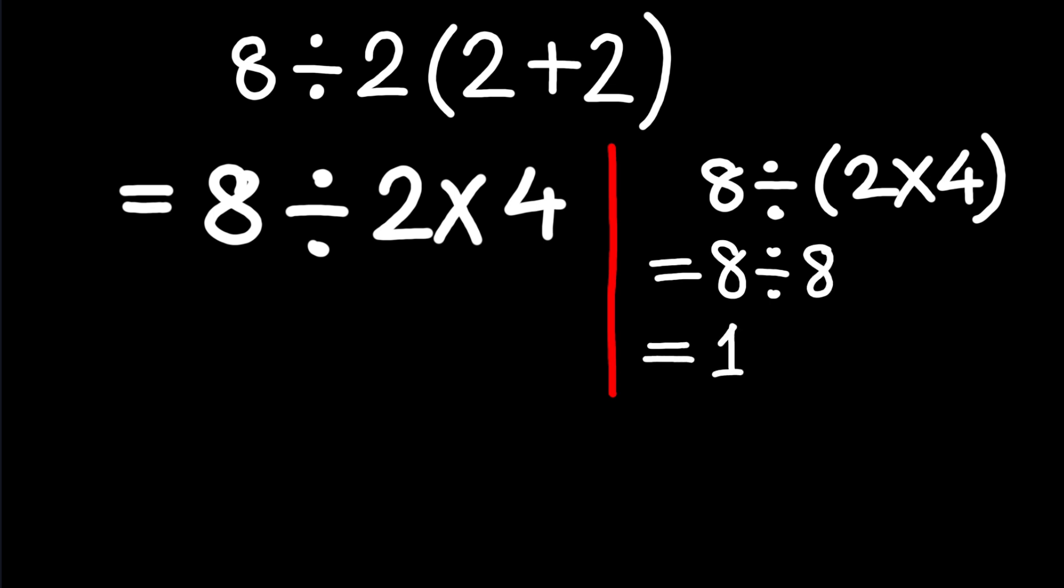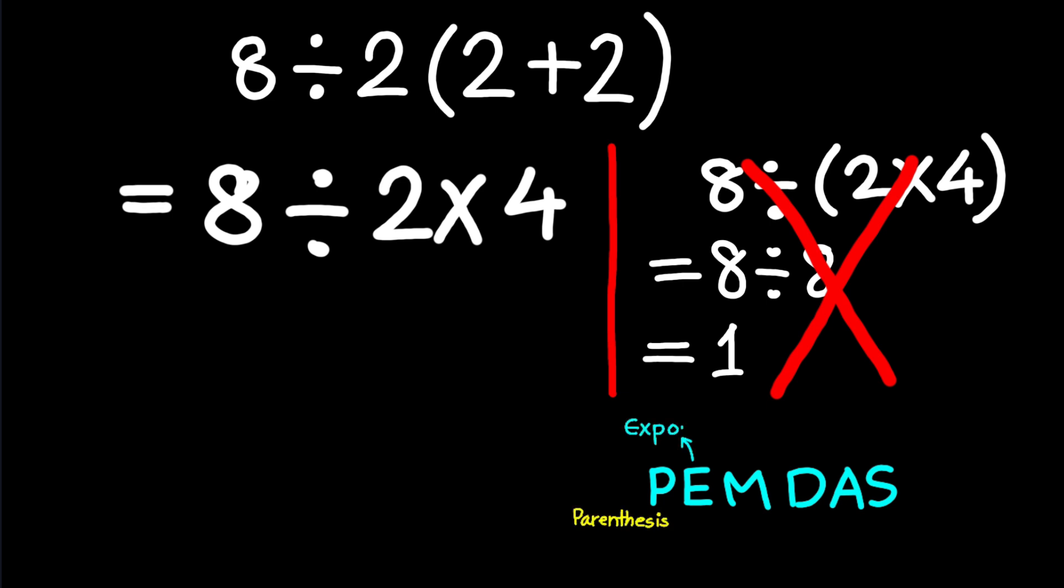But that's actually not correct according to the order of operations. Remember, the order of operations, PEMDAS, means P stands for parentheses, E for exponents, M and D for multiplication and division, and A and S for addition and subtraction.